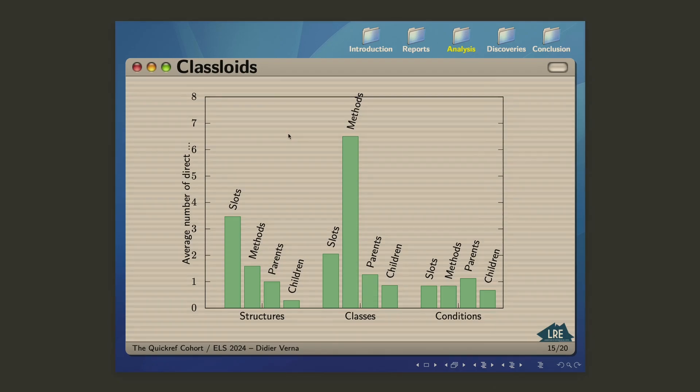But on the other hand, if you look at the average number of parents for structures, it's exactly one because you have only single inheritance. But when you look at the average number of direct superclasses for classes, you see that it's only slightly above one, which means, which seems to indicate that people do not have much use for multiple inheritance. This is what it tells you. So that's also yet another example of interesting statistical insight that you can get from that cohort.